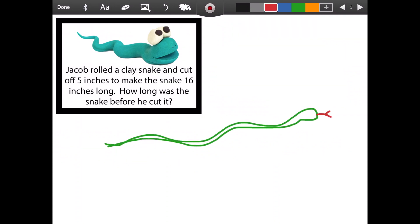Beautiful snake. So he rolled out a clay snake, but then he cut off five inches. He cut off five inches. This is now gone. To now make it 16 inches long.